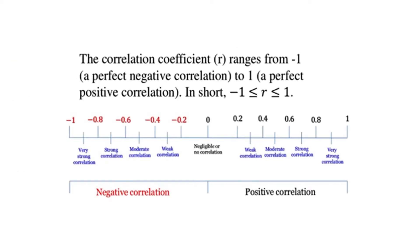To interpret the correlation coefficient, you need to consider both the sign and the magnitude of the value. The sign tells you the direction of the relationship. A positive correlation means that as the value of one variable increases, the value of the other variable tends to increase as well.